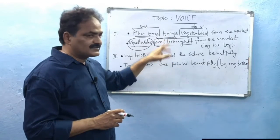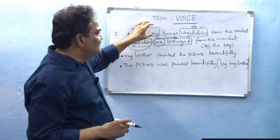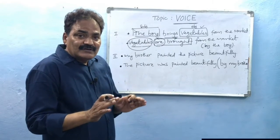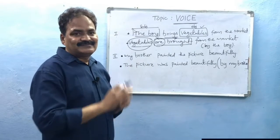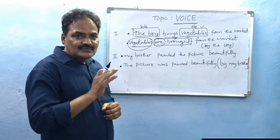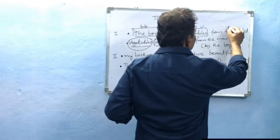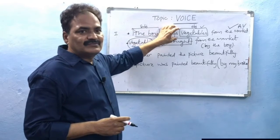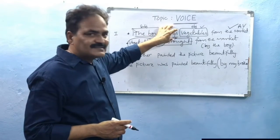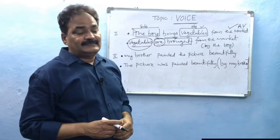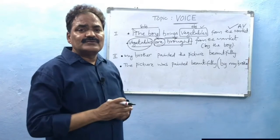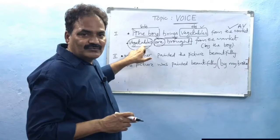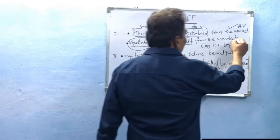In the first sentence, the subject is doing the work, whereas in the second sentence the subject is not doing the work — but something happened to the subject, and that is understood from the second sentence. So we say the first sentence is in active voice because the subject is active in doing the work. In the second sentence, the verb became passive, and this is done to the subject, so we say the verb 'brought' is in passive voice.